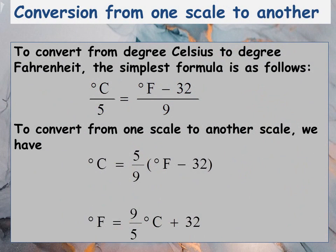To convert from degree Celsius to degree Fahrenheit, the simplest formula is as follows. To convert from one scale to another we have the following two formulas — note them down in your notebook. We will solve numericals related to it later.